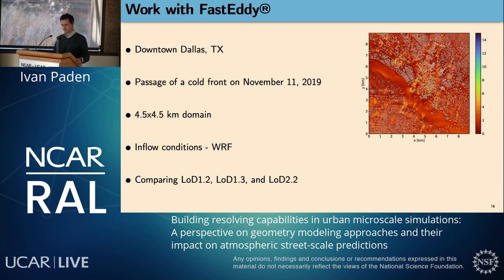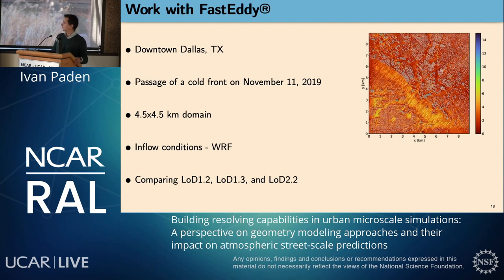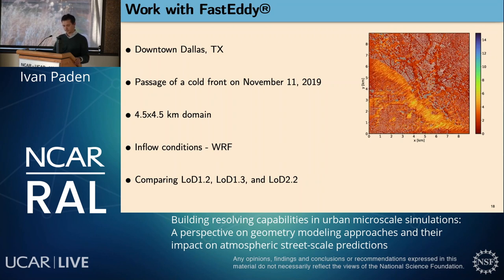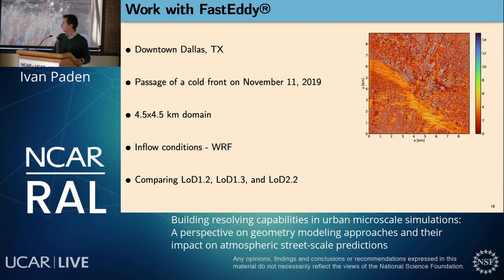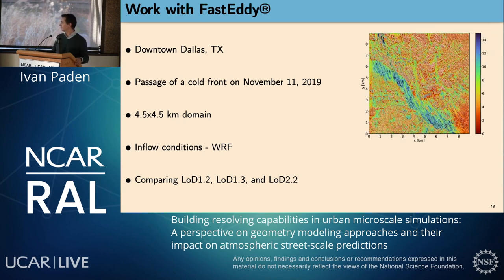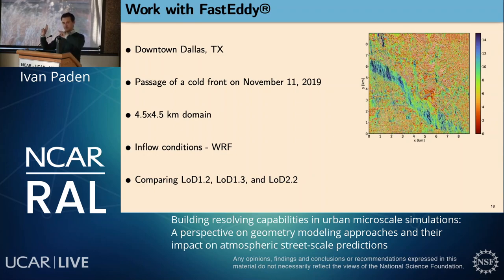To look into these questions, I've been using FAST-Eddie from RAL to do a case study of downtown Dallas — specifically the passage of a cold front in November 2019. The domain I looked at was a 4.5 by 4.5 kilometer domain. Inflow conditions for FAST-Eddie are created from WRF. What we are comparing are the differences between levels of detail 1.2, 1.3, and 2.2 and their individual combinations.